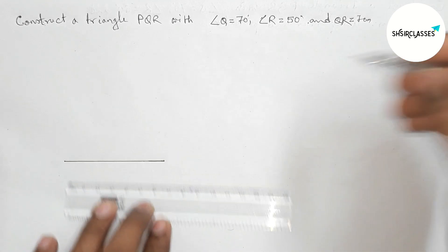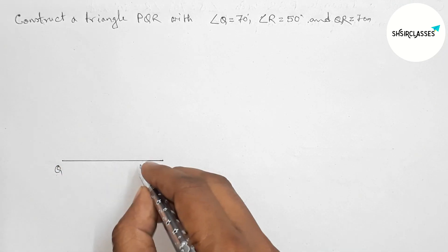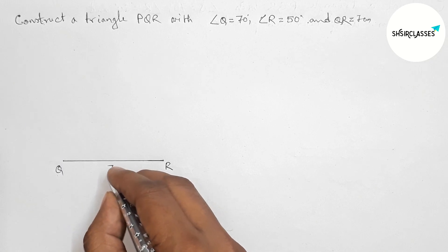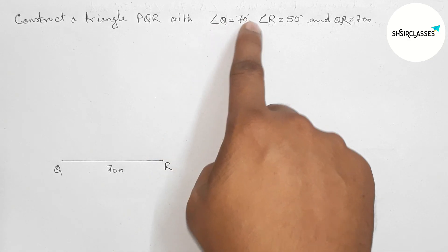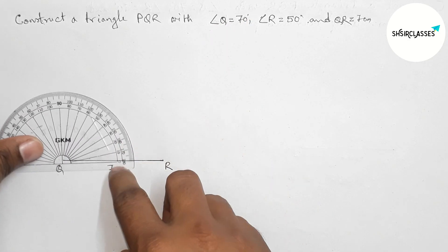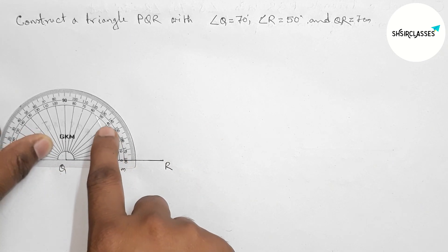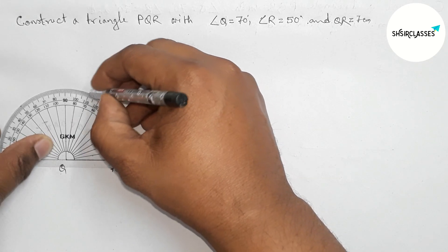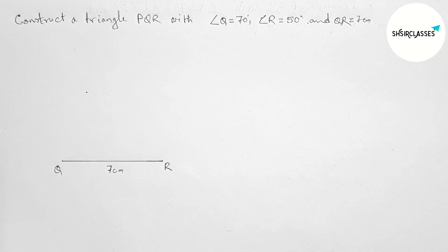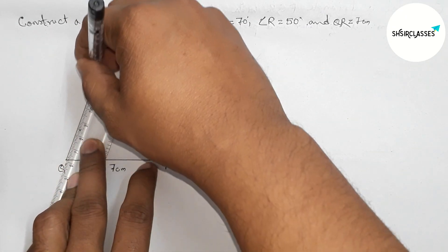Next, drawing a 70 degree angle on the point Q with the help of a protractor. So first putting the protractor on the point Q perfectly, then counting 70 degrees. So here this is 70 degrees. So first marking here, then joining this line to get a 70 degree angle.